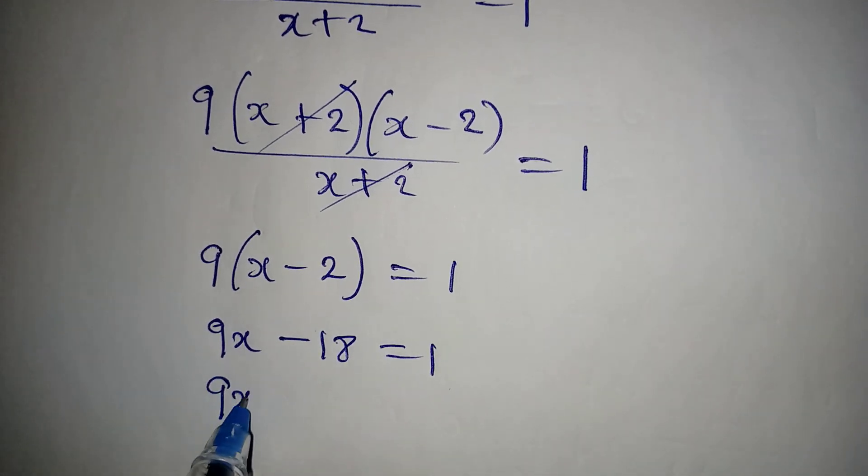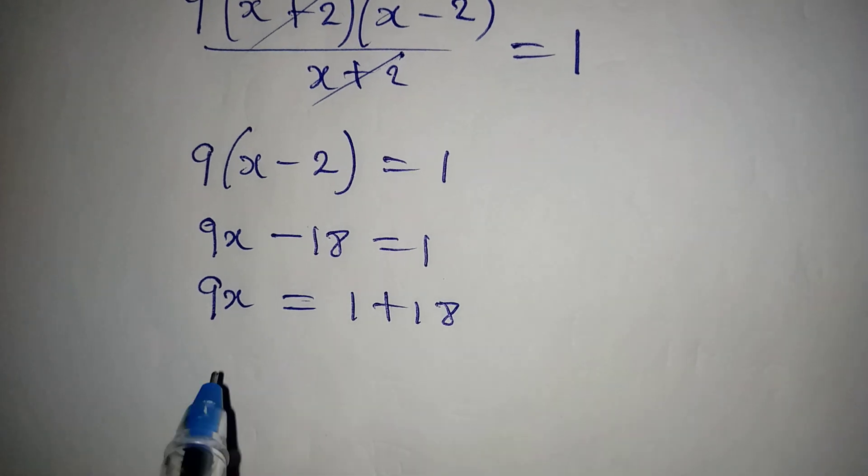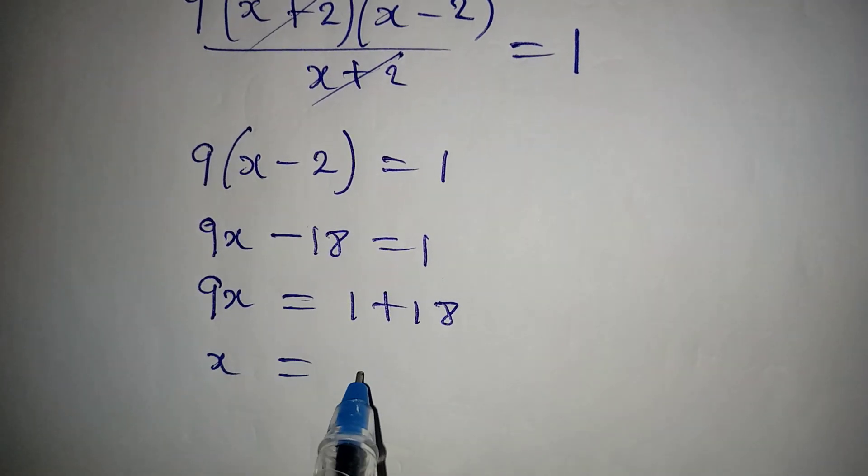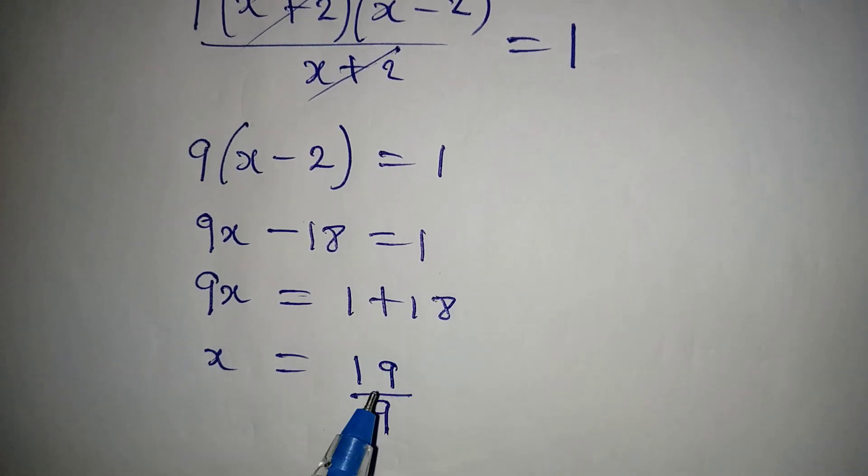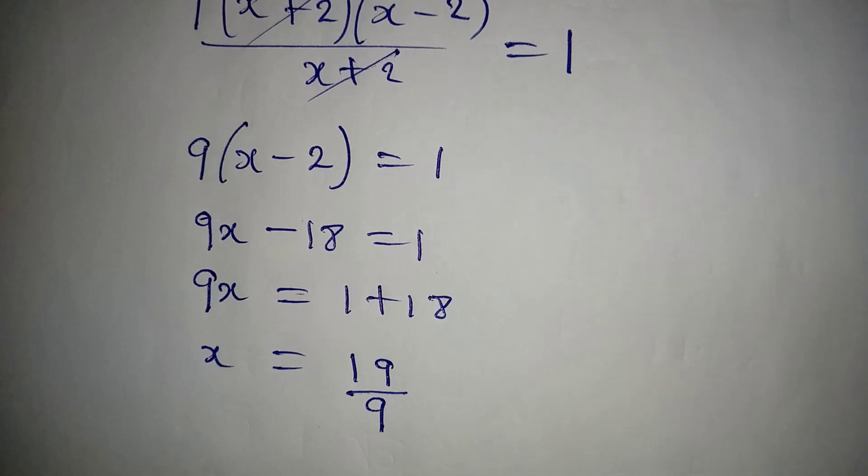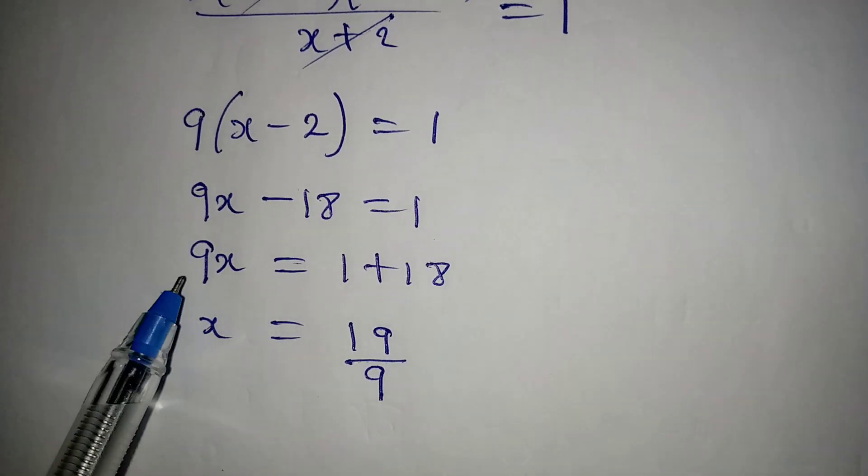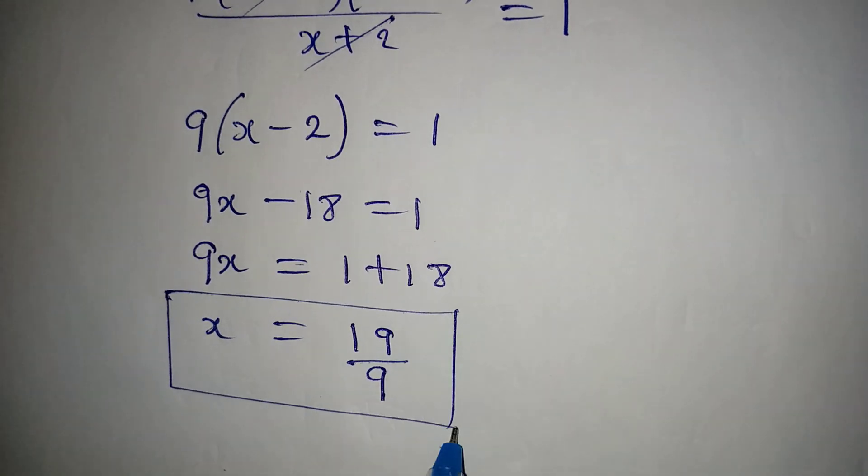This means that 9x is equal to 1 plus 18, so 9x equals 19. Then x is 19 divided by 9. This is the value of x that will satisfy the equation.